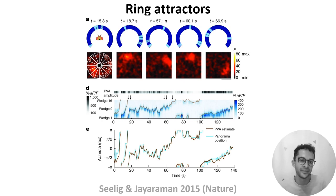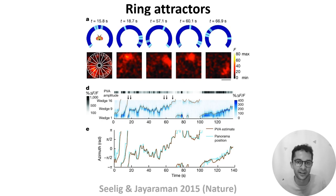So in sum, ring attractors are a nice example of where experiments and theory come full circle. That's all about networks from me — in the next videos, Dan will talk about modeling synapses and networks in more detail.